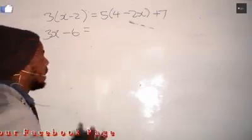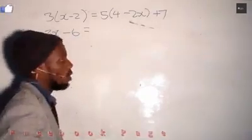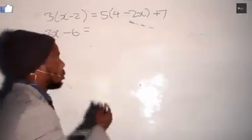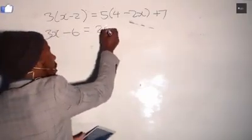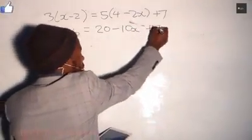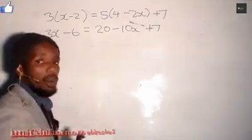The same thing that we did on the left hand side, we do on this side. We have a bracket also, so we break the bracket, we open the bracket, we apply our BODMAS. 5 times 4 is 20, 5 times negative 2x is negative 10x plus 7. So there it is now.